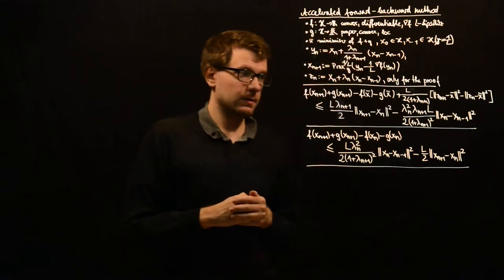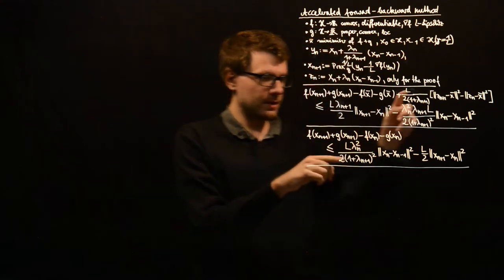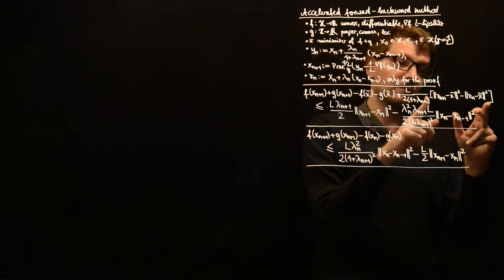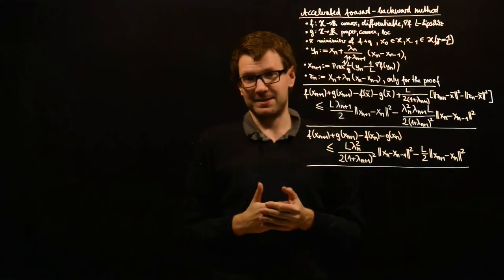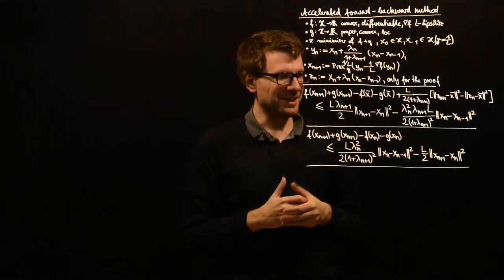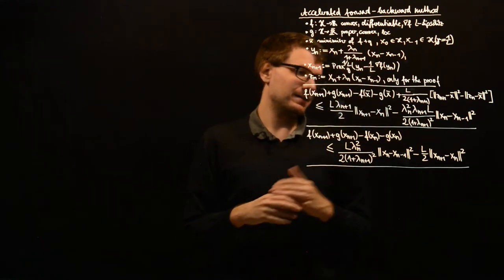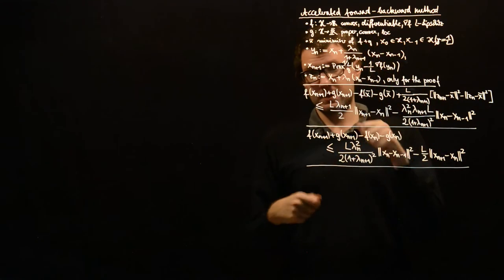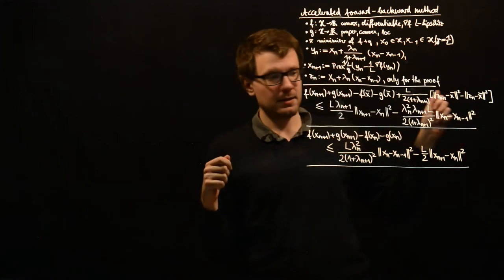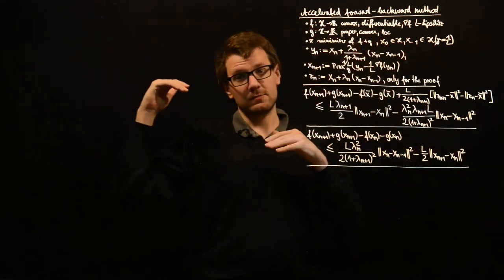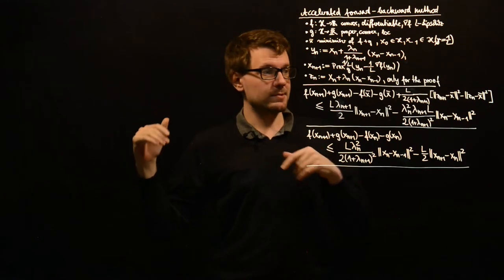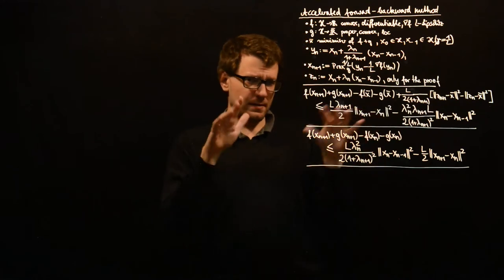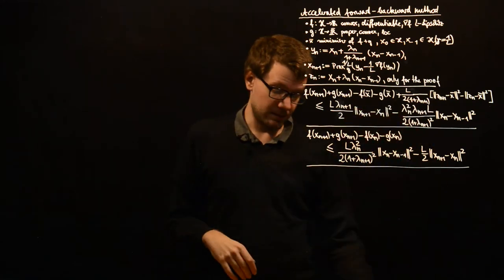To this end, we should observe two things in these inequalities. The first thing is if we want to do our telescoping, then we want the factor here to be independent of n, because then we can just add the inequalities for n equals 0, 1, 2 and all the terms cancel out. If we had some factor in front of this, it would not exactly cancel out, and that is a problem.